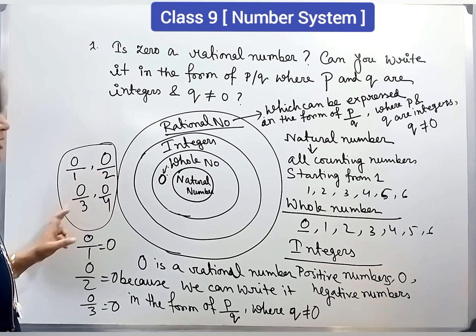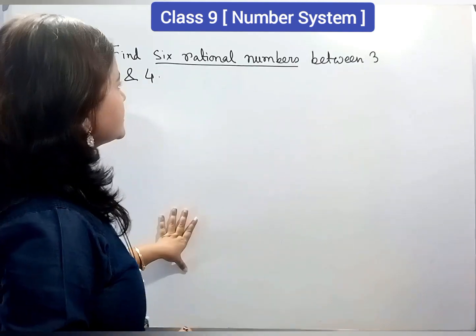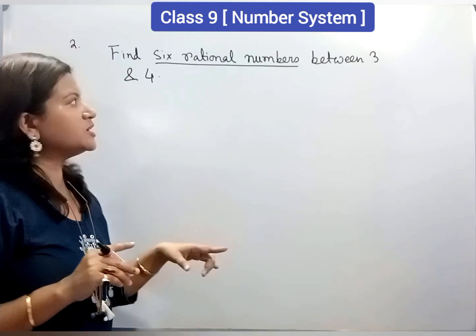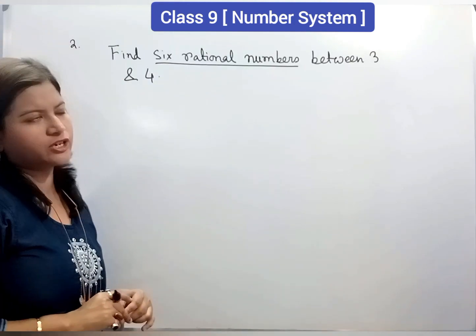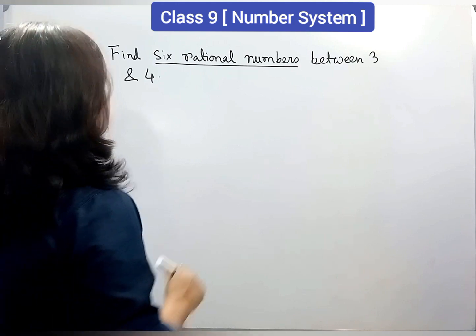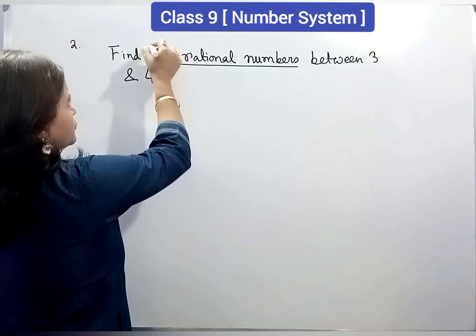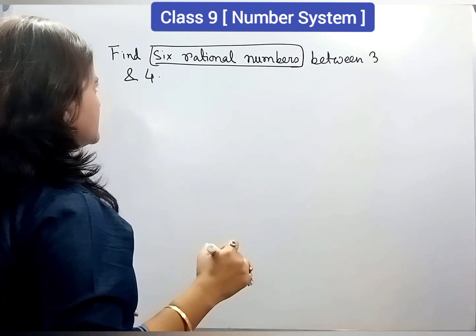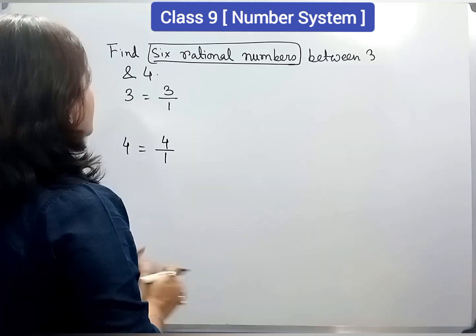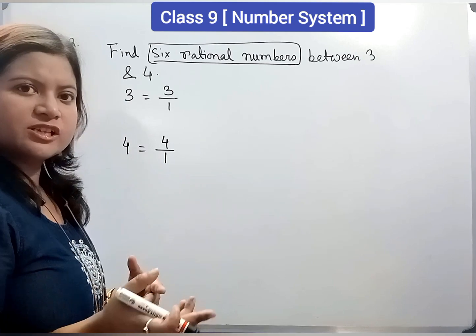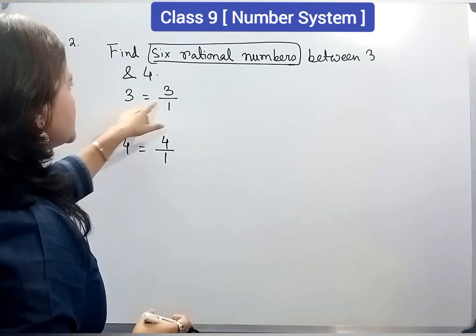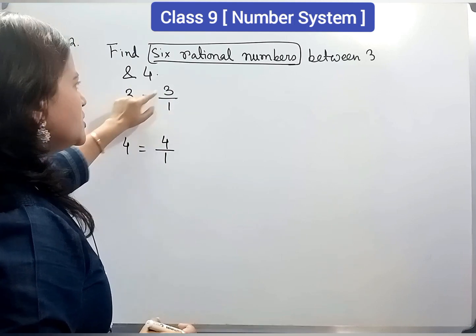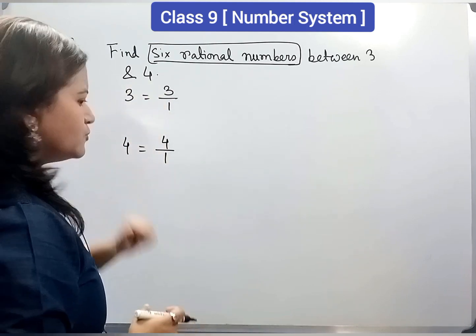Now, question number 2. Find 6 rational numbers between 3 and 4. Now, how to do this? As we have to find out 6 rational numbers, these 3 and 4 are also rational numbers. That's why we can express it in the form of p by q. 3 equal to 3 by 1 and 4 equal to 4 by 1.